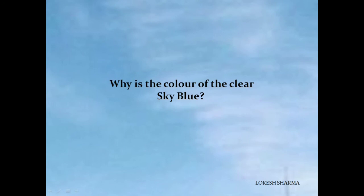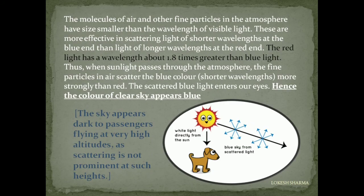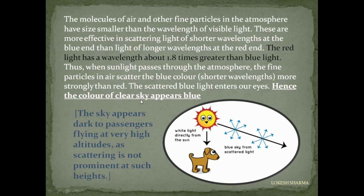Why is the color of the clear sky blue? This is because of scattering of sunlight by molecules of the atmosphere. The molecules of air and other fine particles have size smaller than the wavelength of visible light. These are more effective in scattering light of shorter wavelengths at the blue end than light of longer wavelength at the red end. The red light has a wavelength about 1.8 times greater than the blue light. Thus fine particles scatter blue light more strongly, and the scattered blue light enters our eyes — hence the clear sky appears blue. At very high altitude, scattering is not prominent so the sky appears dark to astronauts.